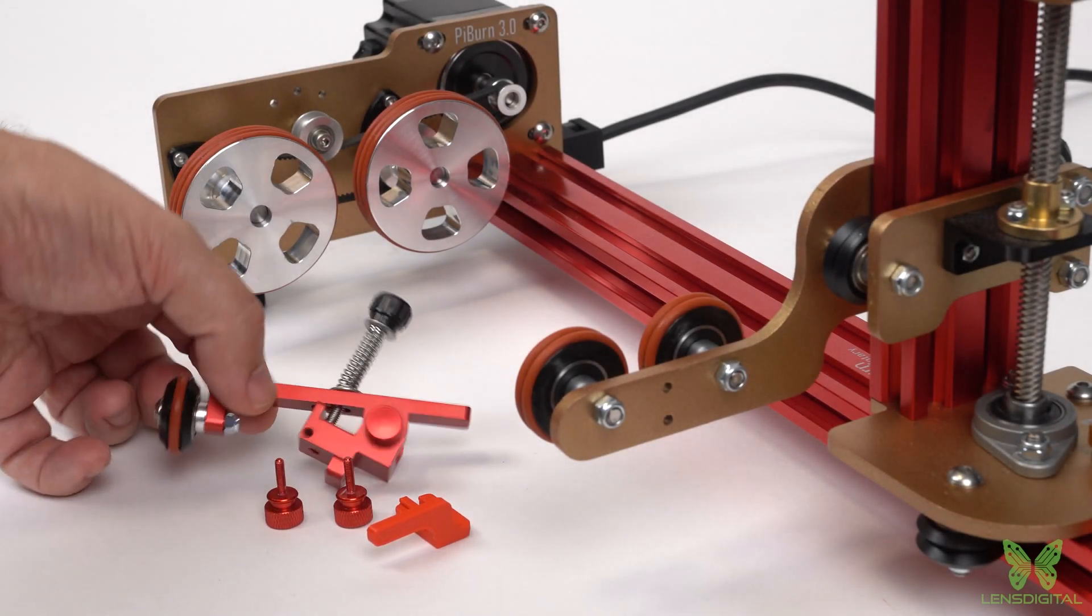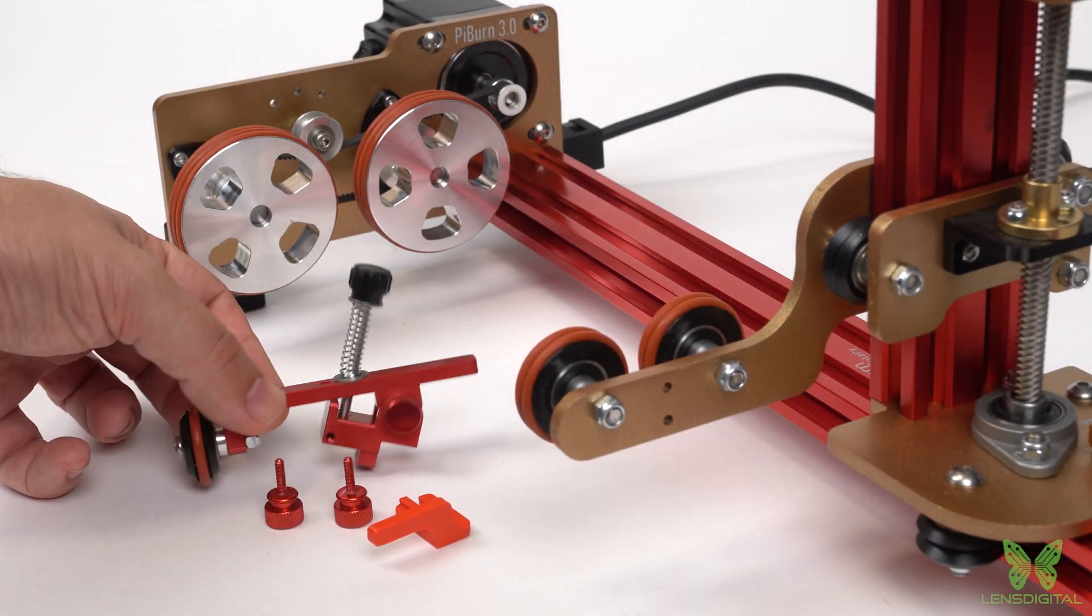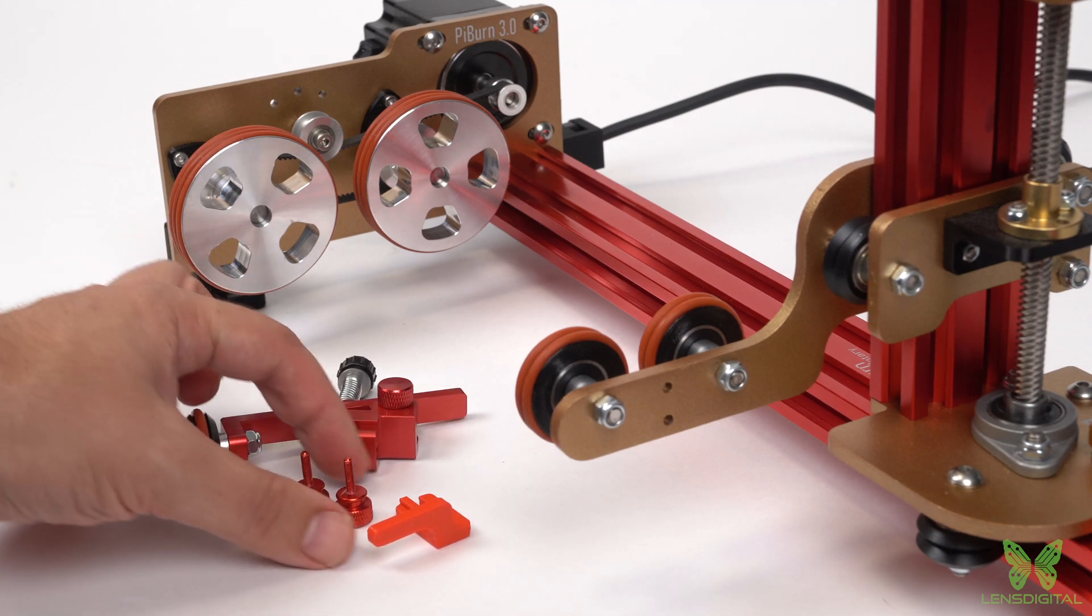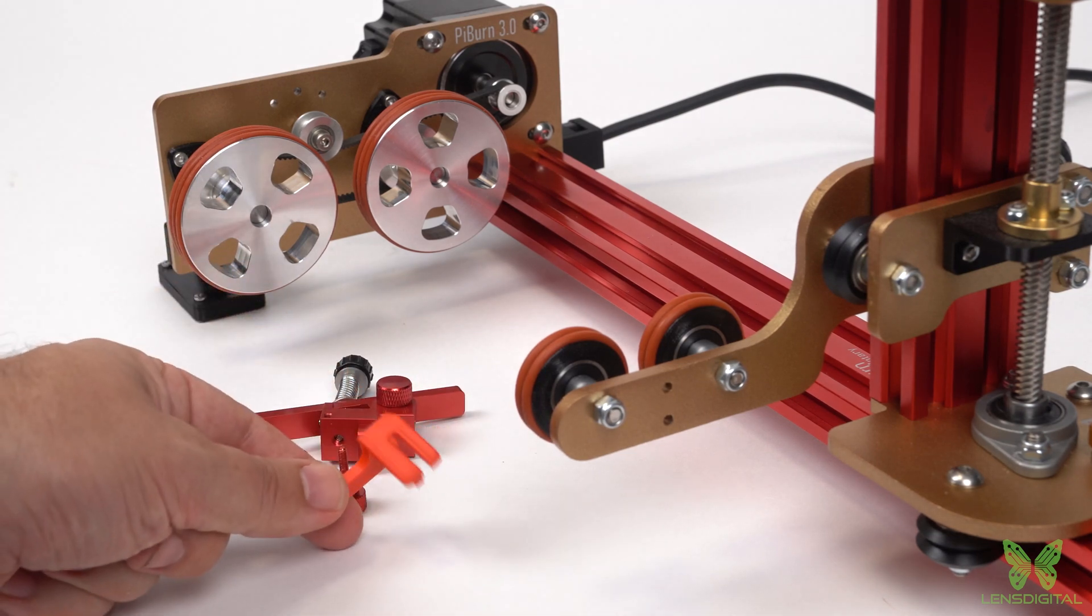All PiBurns now come with a newly designed metal clamp. There's no other clamp like it. With your clamp you will receive two M3 thumb screws and a plastic front end stopper piece.